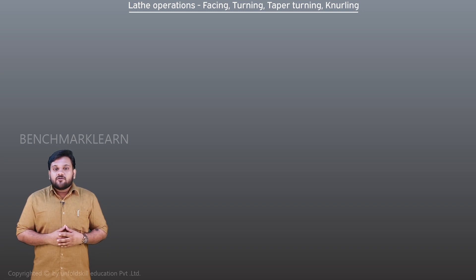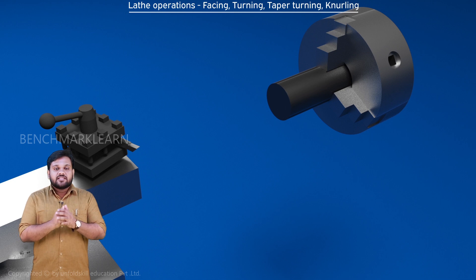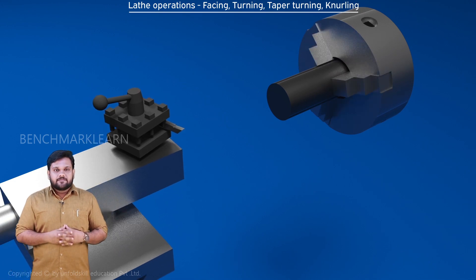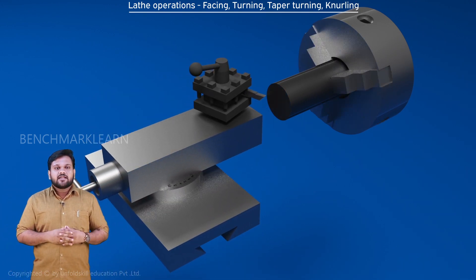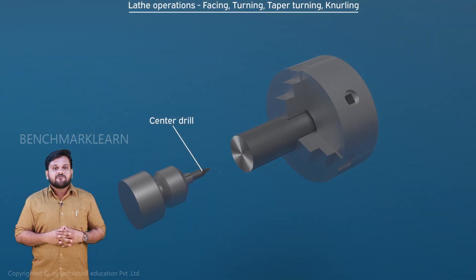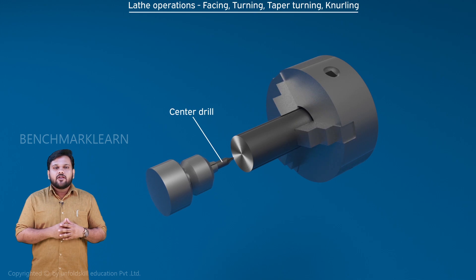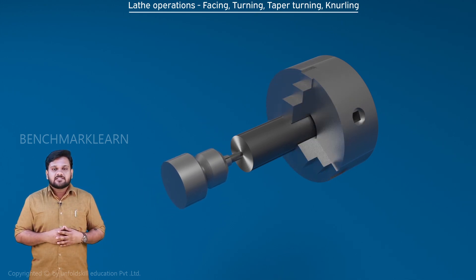The general procedure for turning is as follows. The workpiece is held in a chuck with a short length projecting out and then it is rotated. Facing is done by moving the cutting tool, known as the facing tool, across the end face of the workpiece. A center hole is produced on the end of the workpiece using a drill bit fixed on the tailstock.